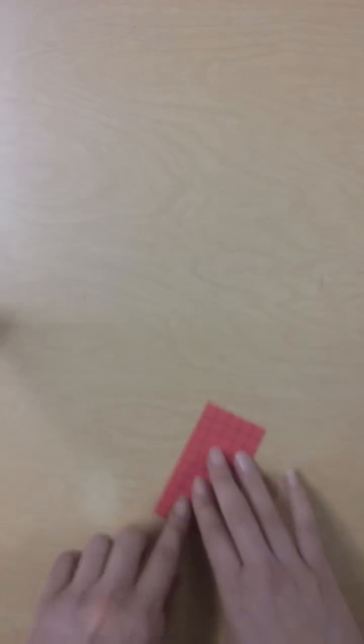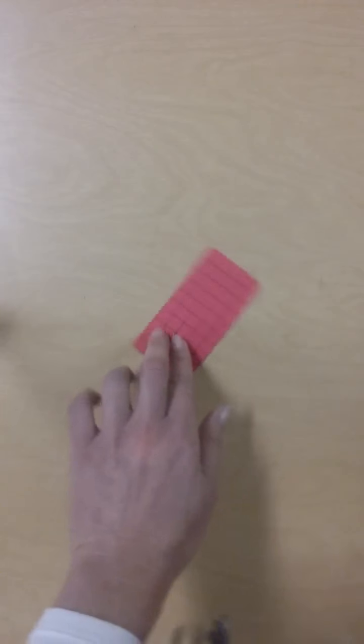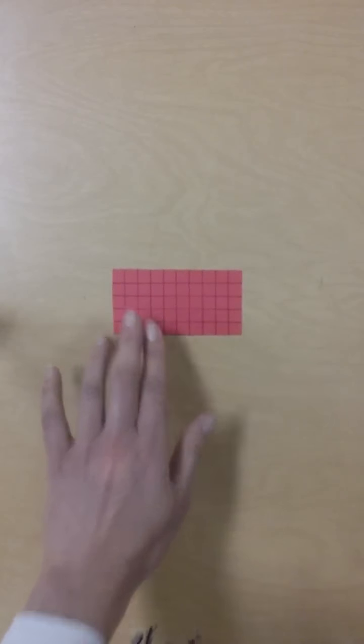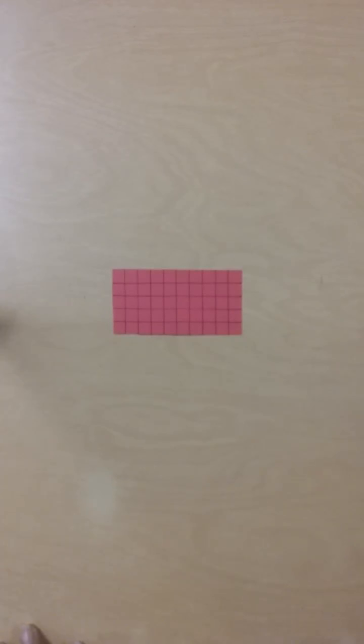Now, sometimes an object, oftentimes on a worksheet, you'll see that it has a grid on it like this. And it might ask, what is the perimeter of this object? In that case, I can count each little interval here.